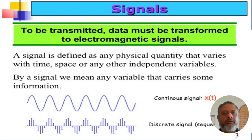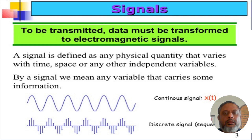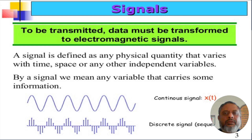The information from the sensors is available in electrical form, and this electrical form of data is called a signal. A signal is defined as any physical quantity that varies with time, space, or any other independent variable. By signal, it is meant any variable that carries some information. Broadly, signals may be of two types: continuous signal or discrete signal, or a sequence or train of impulses.